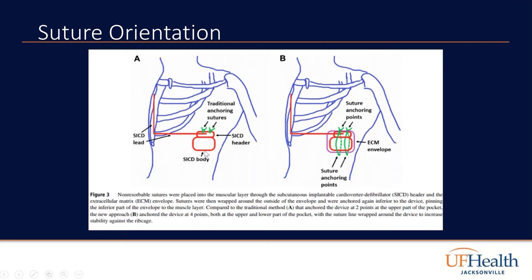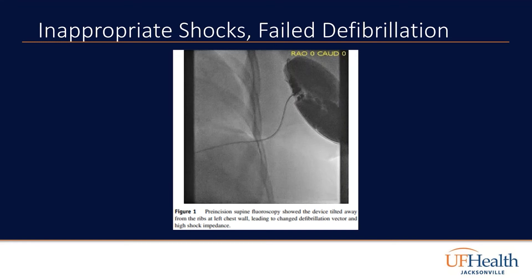Unfortunately, it does not have traditional anchoring sutures on the inferior portion. What that may lead to is a tilt of the can internally and physiologically, where the vector orientation may change. By using the extracellular matrix, we were able to form four suture anchoring points and essentially buttress the device to the muscle, stabilizing the generator and preventing it from moving in an orientation unfavorable for sensing.